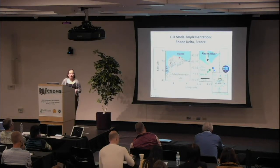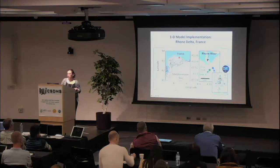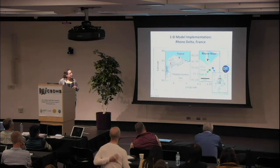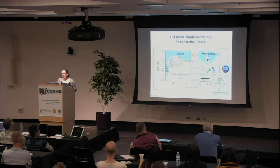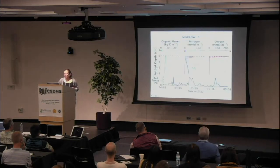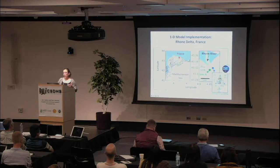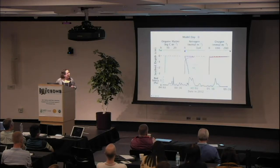For the remainder of the talk, I'll give two examples of model implementations. The first focuses on a location offshore of the Rhone Delta in France, where the Rhone River flows through France into the Gulf of Lyons and the Mediterranean Sea. We chose this location because of a fantastic observational dataset at sub-millimeter scale, from Christophe Rabier's group at CNRS in France. For this site, we implemented a one-dimensional vertical model to represent their study location.